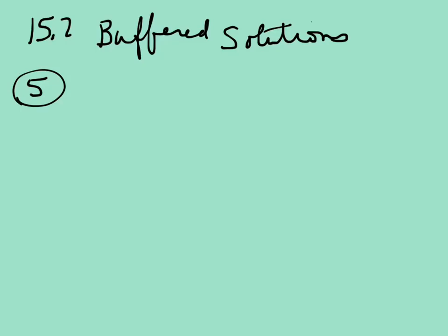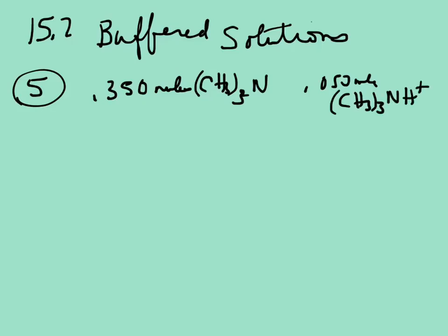It basically says that you have a solution that contains 0.350 moles of CH3N and you have 0.050 moles of CH3NH+ and enough water to make one liter. So that means this is now our molarity, so that makes life easier. And then it says that we know that the Kb is equal to 6.25 times 10 to the negative fifth. And it asks calculate the value of the hydroxide when you have these two solutions together.